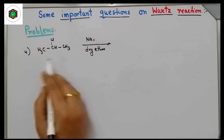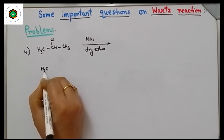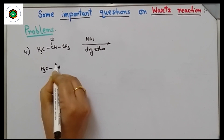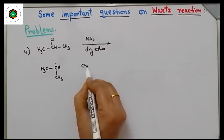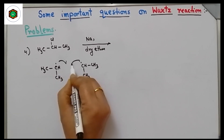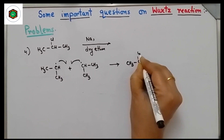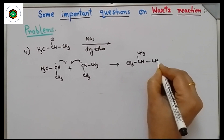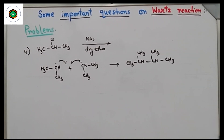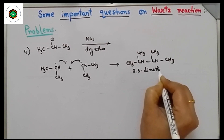Here the starting material is isopropyl chloride, which gives the isopropyl free radical. Combination of two such radicals gives CH₃CH(CH₃)–CH(CH₃)CH₃, which is 2,3-dimethylbutane.